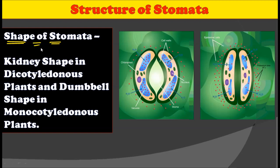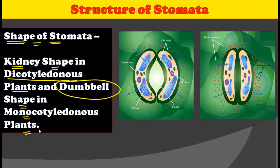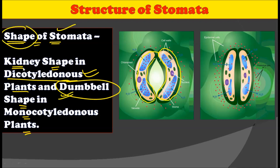Now let's see the shape of stomata. The shape of stomata is kidney-shaped in dicotyledonous plants, while it is dumbbell-shaped in monocotyledonous plants. As you can observe here, this is a dicotyledonous stomata showing the kidney shape. So kidney shape stomata is found in dicotyledon plants, while in monocots, the dumbbell shape stomata is found.